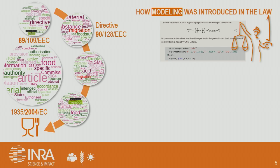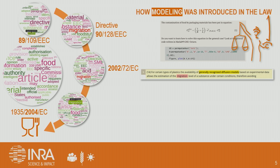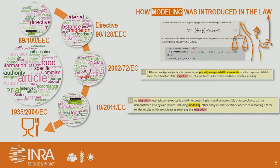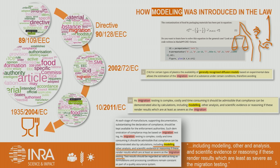Now if we look at European law, more or less it says you have the right to use modeling to verify contamination. The law determines the maximum amount which could be acceptable in the food. In 2002 we introduced the possibility to use models to check that contamination is not too large, and it was stated that you can use modeling if you use generally recognized diffusion models. In 2011 the law changed — it now states that as migration testing is complex, costly, and time-consuming, it should be admissible that compliance can also be demonstrated by calculations including modeling.